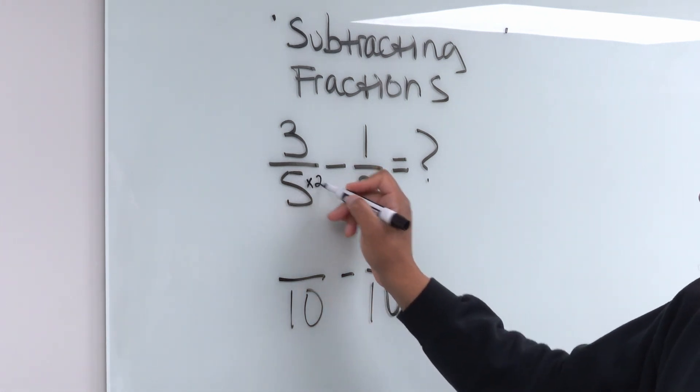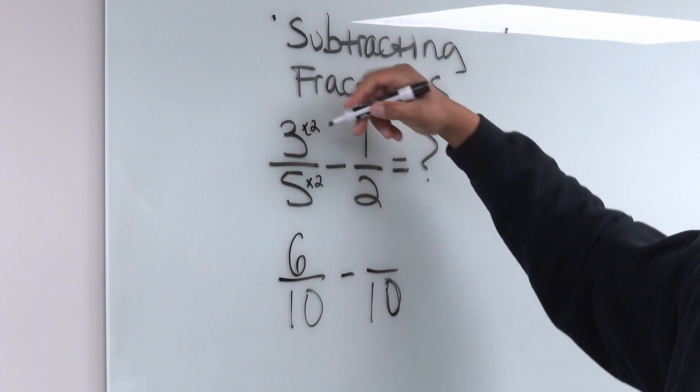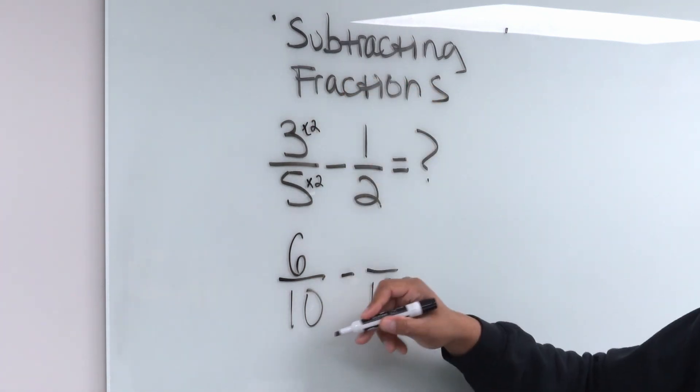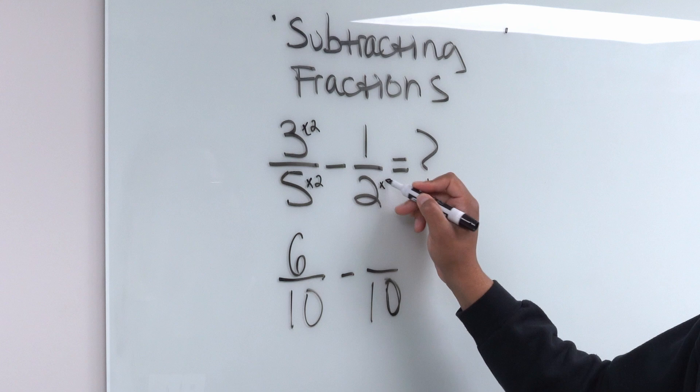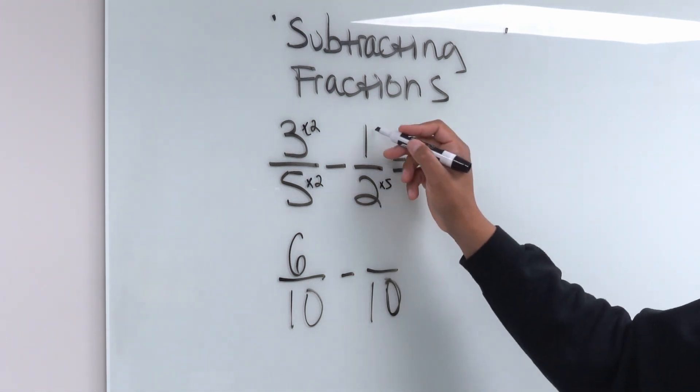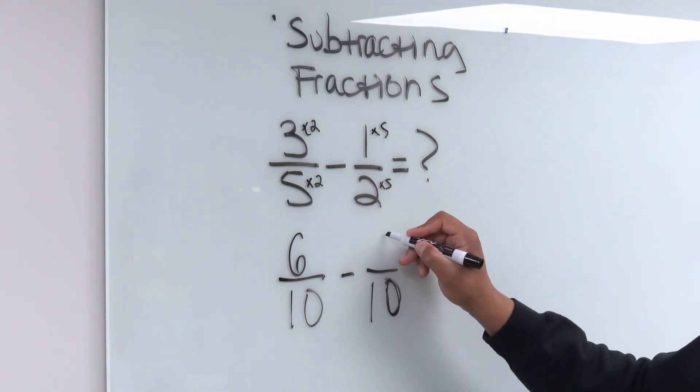So if I did five times two to get 10, I got to also do three times two to get six because three-fifths is equivalent to six-tenths. And then over here, how did this two turn into a 10? I multiplied it by five. So if I did two times five, then on top, I got to do one times five. I got to be consistent. So one times five gives me five.